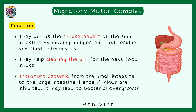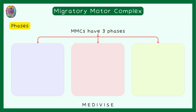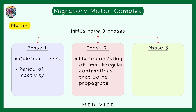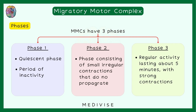There are three phases of the MMCs. Phase 1 is the quiescent phase where not much activity takes place. Phase 2 is where there are small irregular contractions, but these do not really help in propelling content forwards. Finally, phase 3 is where strong contractions take place.